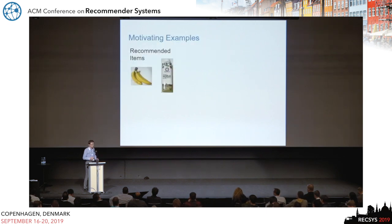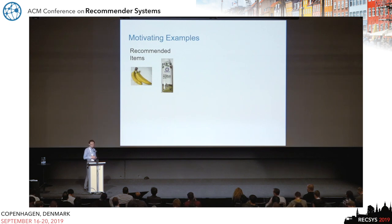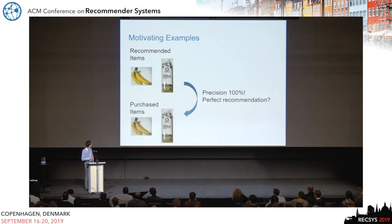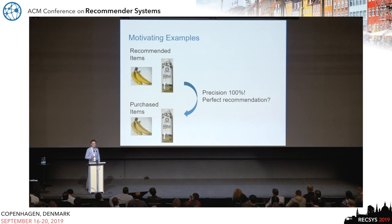What is the problem? A recommender in a supermarket scenario recommends banana and beer to our users. The user purchased the banana and beer. In this case, precision is 100%. Is this recommendation perfect?